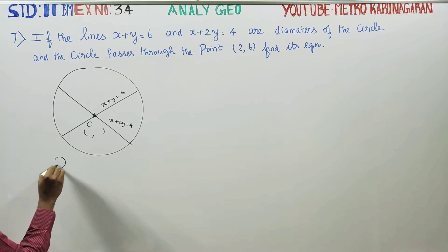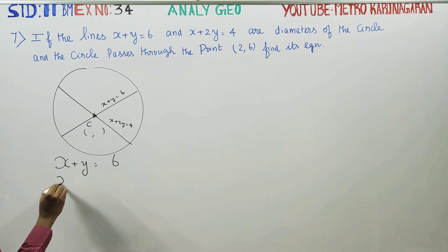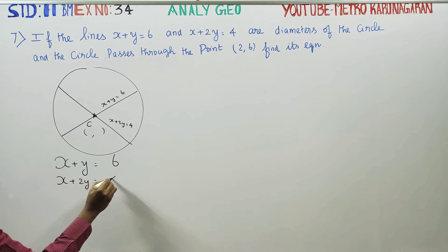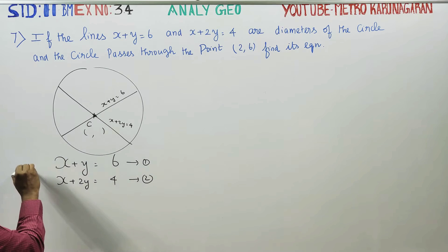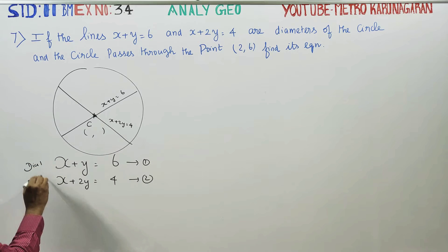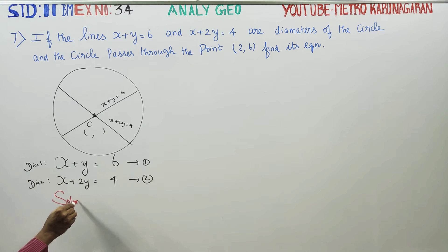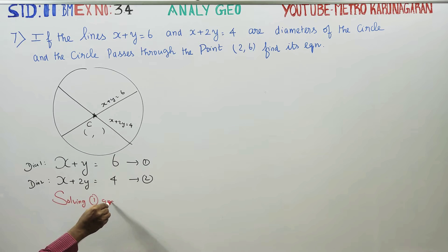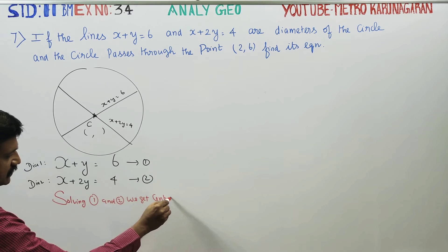We have diameter 1 and diameter 2. If we solve both equations simultaneously, we will find the center of the circle. Solving equation 1 and equation 2 together, we get the center of the circle.